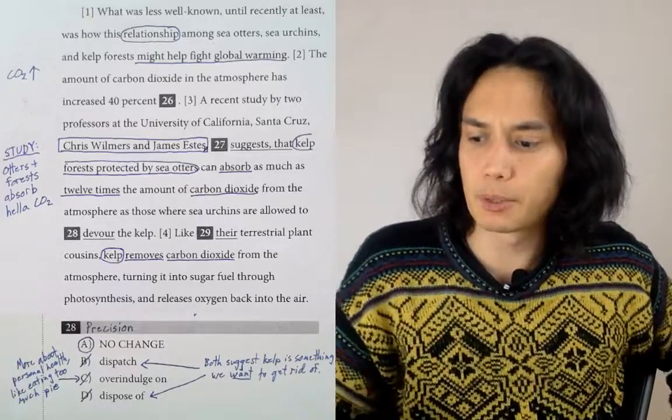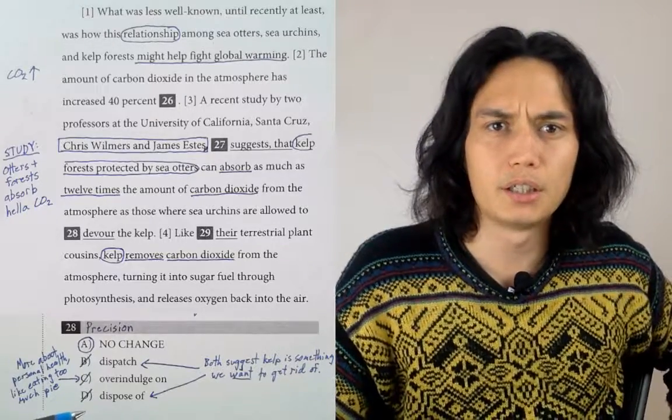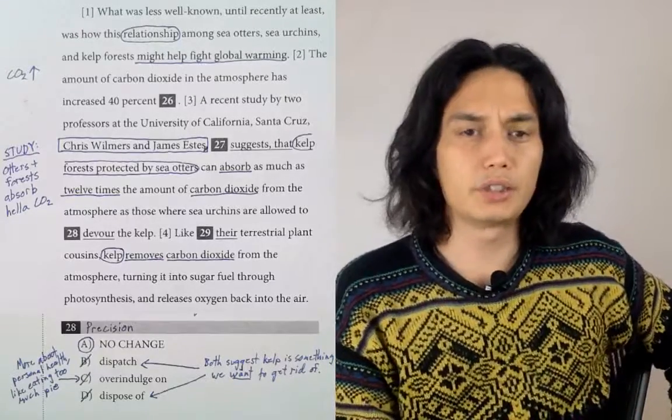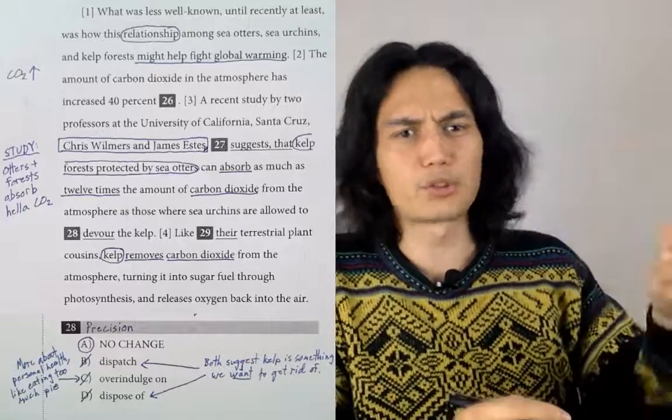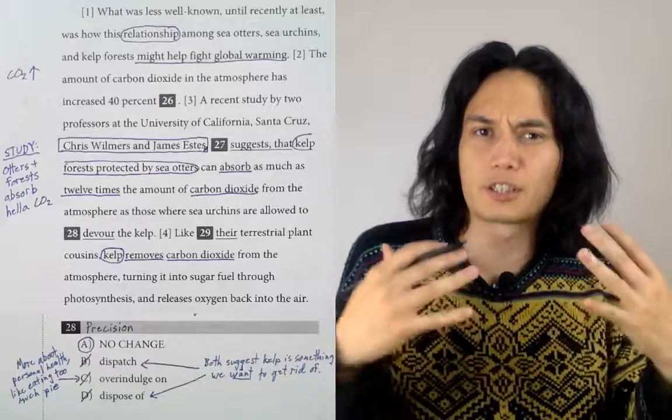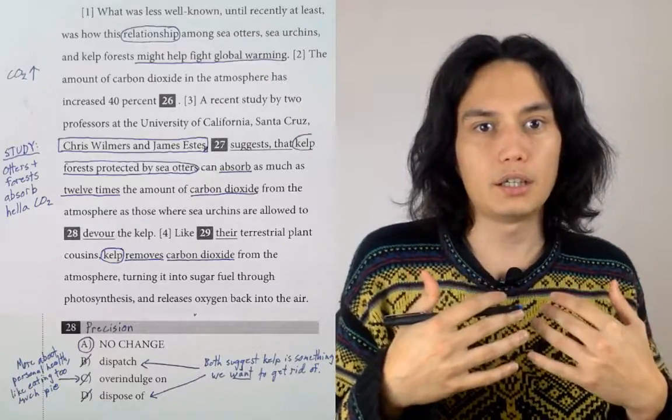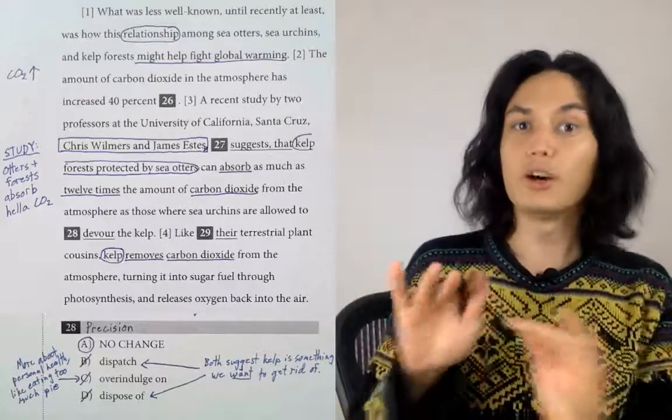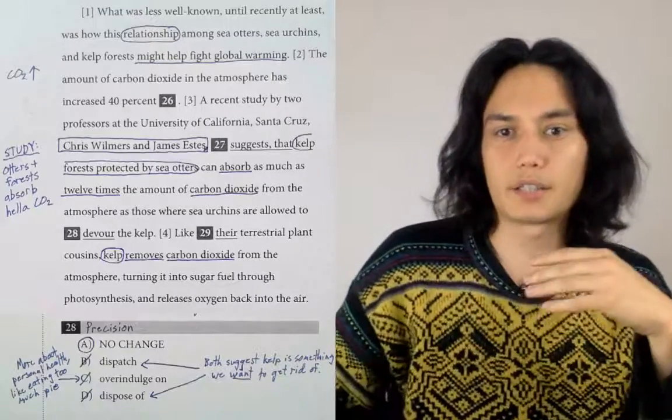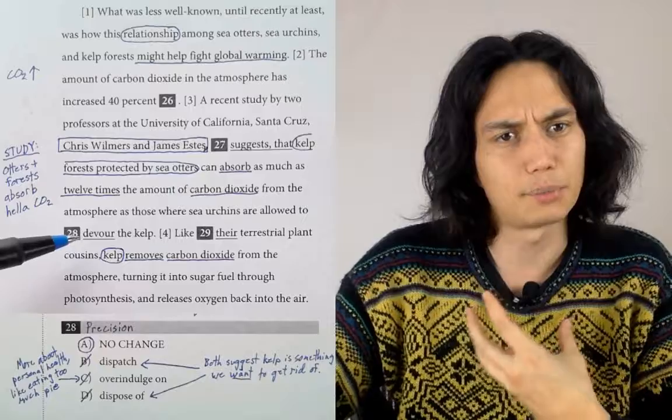Dispose of has pretty much the same meanings. You dispose of trash. You could talk about you dispose of a problem, you dispose of some difficulty. You have a garbage disposal. You get rid of trash. Here again, kelp isn't trash. We like kelp. If anything, we want to dispose of the sea urchins. We want the otters to dispose of the sea urchins. It doesn't make sense to say that the sea urchins are allowed to dispose of the kelp because we like the kelp. It's not trash.